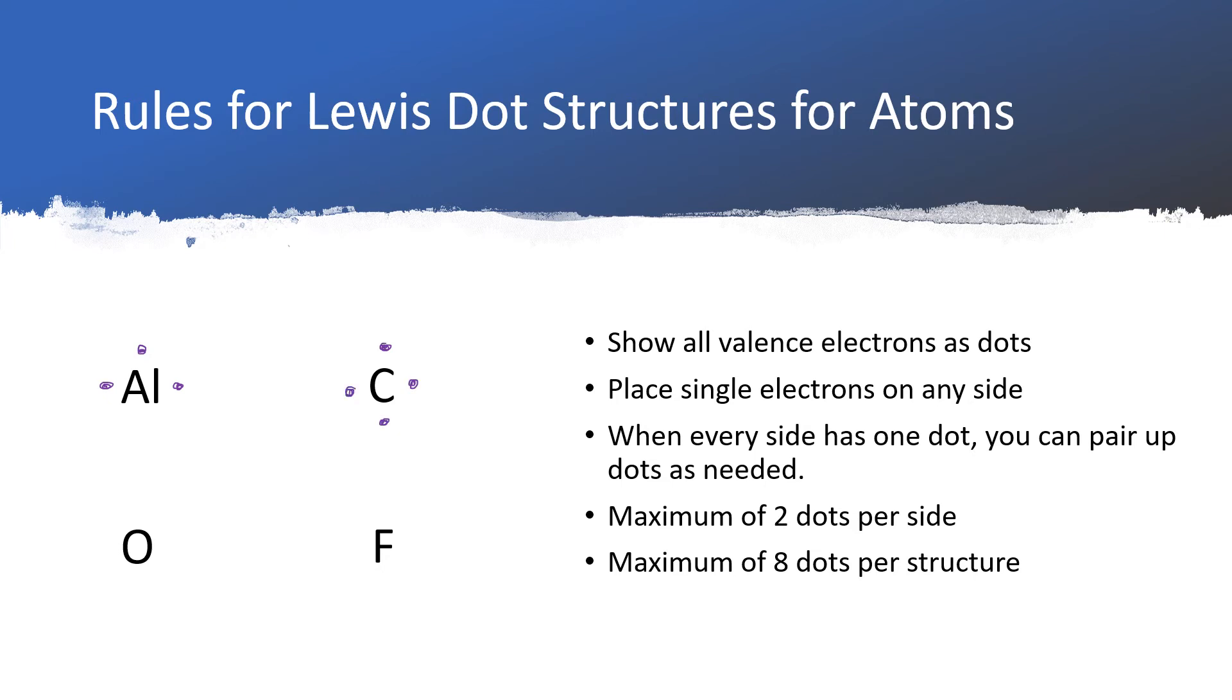We start this process with the valence electrons by putting one on each side. At most, we can put two on a side, but we don't start pairing them up until each side has a single electron.